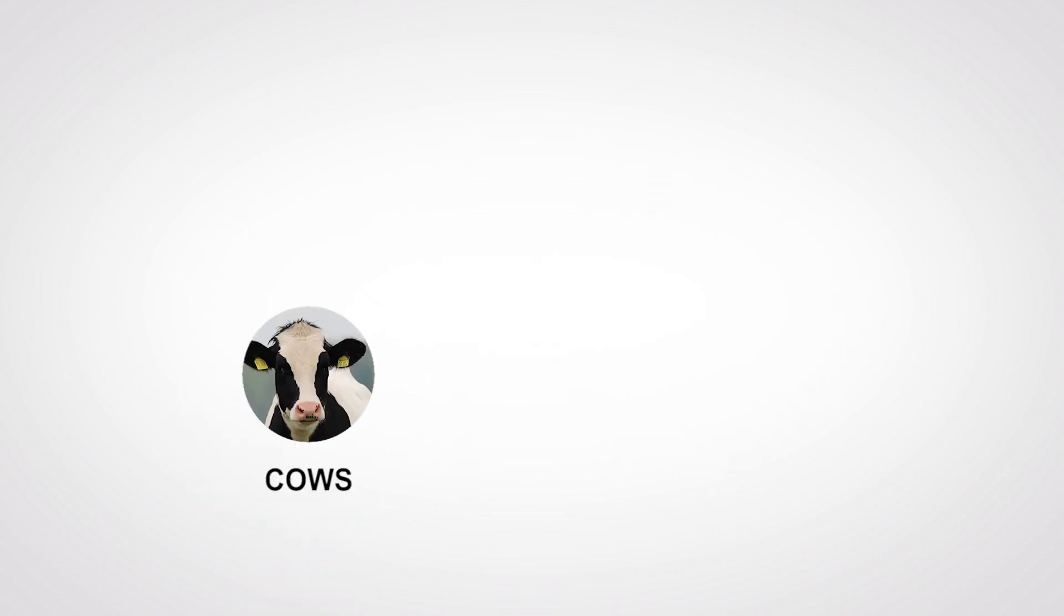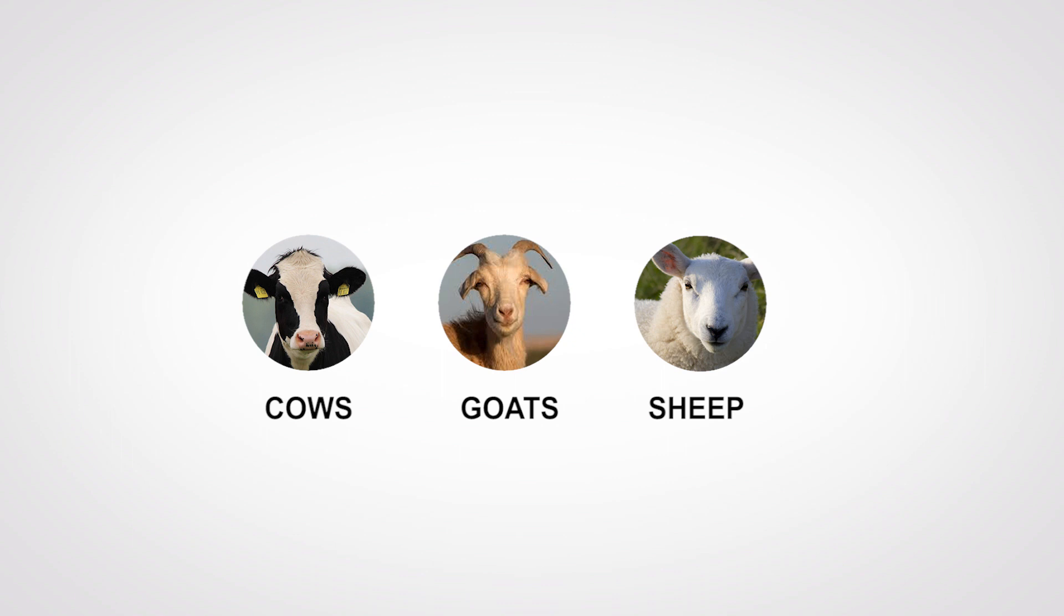The bad news is that cows, goats, and sheep can have prion diseases, and the prions can end up in the meat from these animals. We don't always know which cows, goats, and sheep are infected with prions because it takes years for the disease to become apparent.